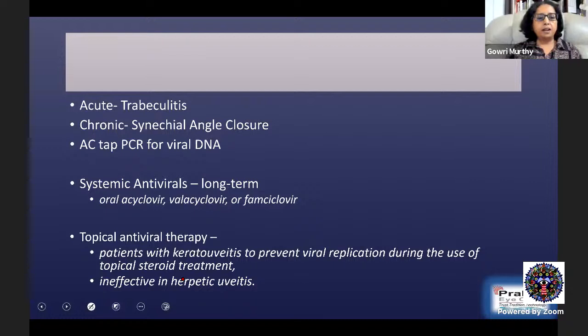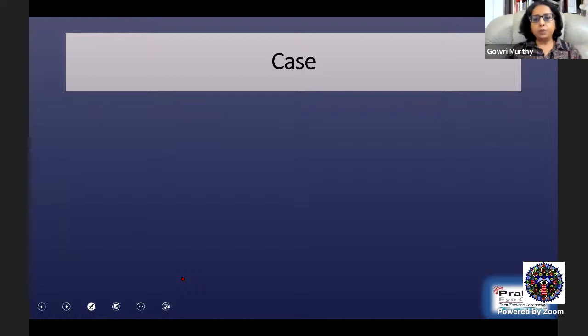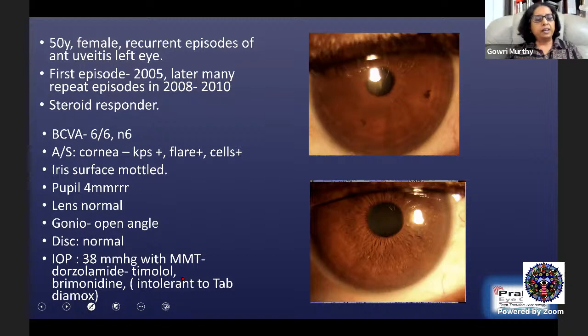Topical antiviral therapy is indicated in patients with keratouveitis because when using topical steroid treatment, you should prevent viral replication or reactivation in the cornea. In pure herpetic uveitis without corneal involvement, topical antiviral is not required. A case example: a 50-year-old patient with recurrent episodes of anterior uveitis in her left eye, first episode in 2005 and many repeat episodes in 2008–2010. She was also noted to be a steroid responder.